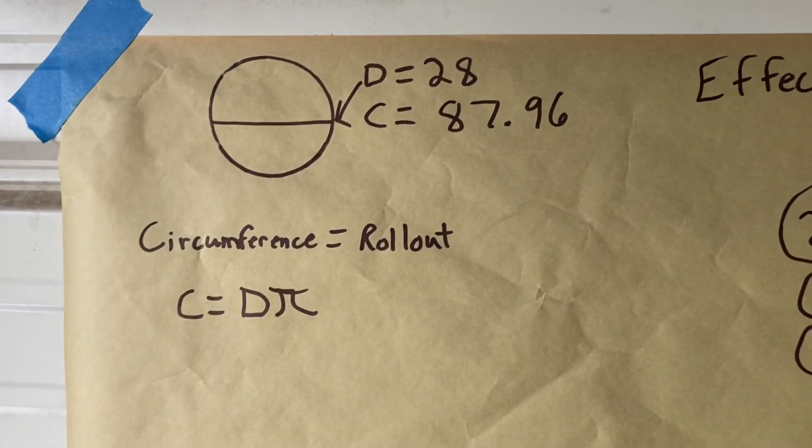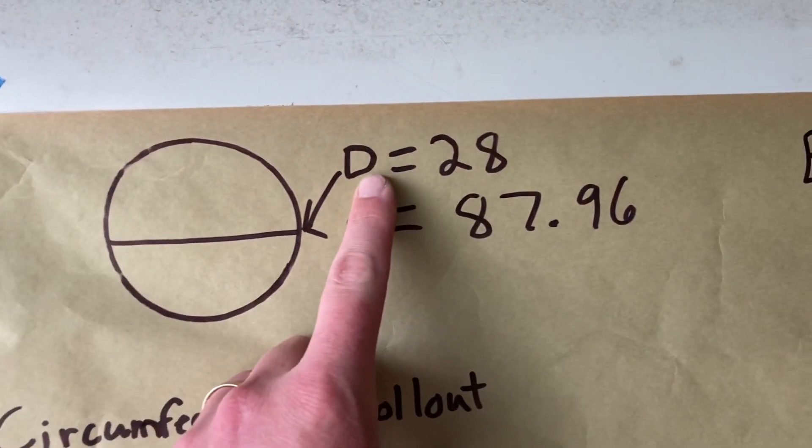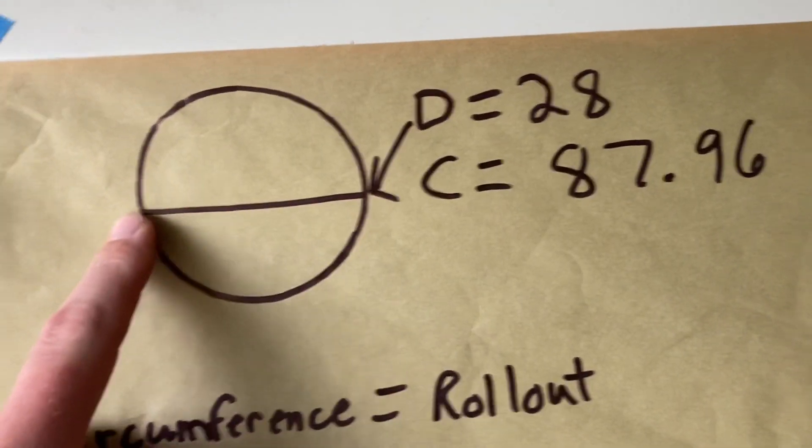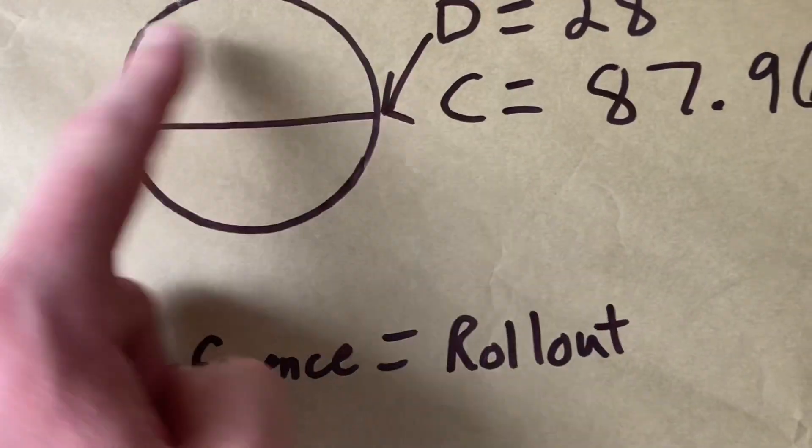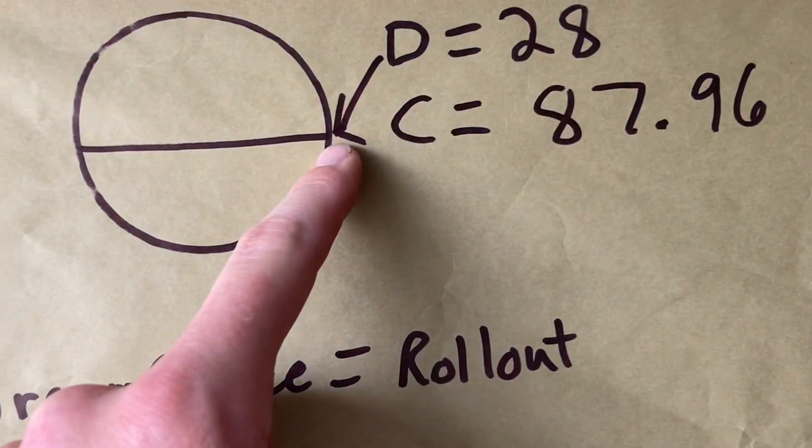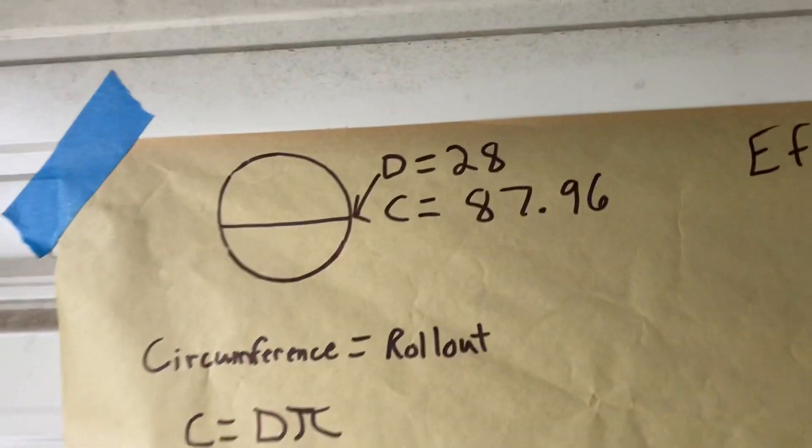A couple things, terms you need to know first. D equals diameter. The diameter is the length across the circle here. Circumference is the length all the way around the circle. Starting here, come all the way around, back to there. I'll show you how to test that in just a minute.